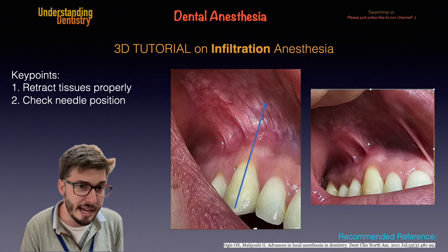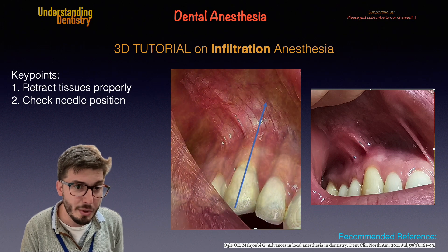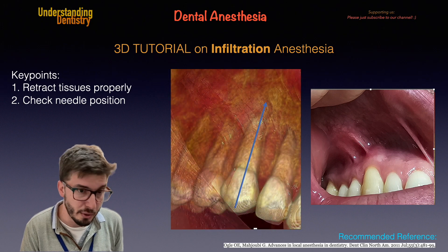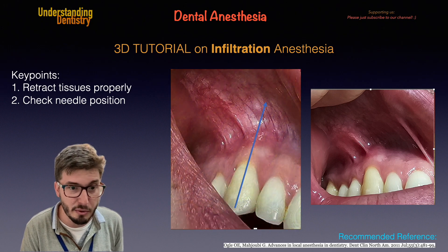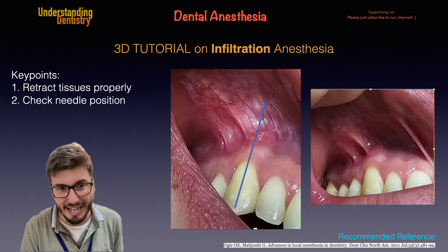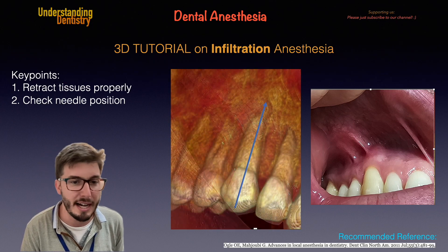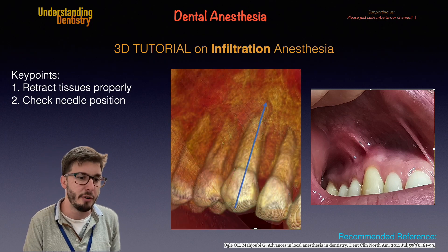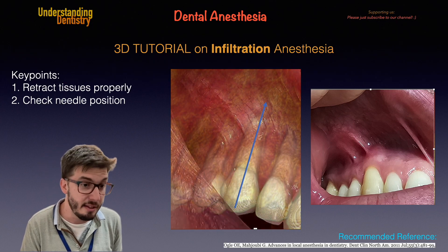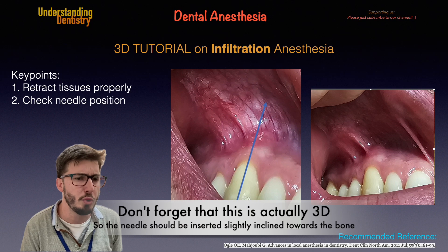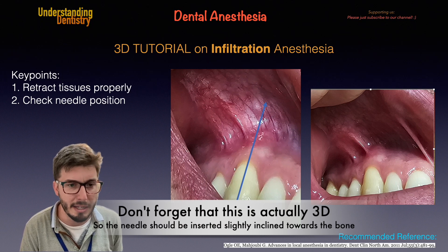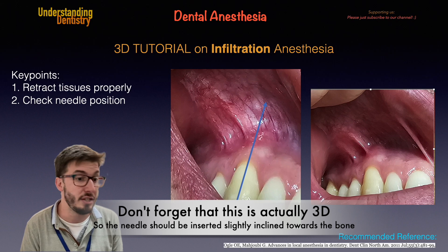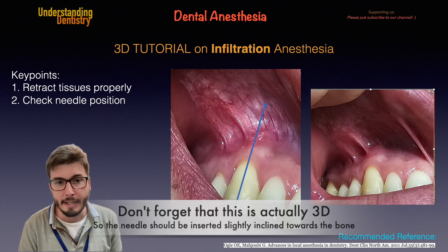Take a look at this arrow showing the end of the root. For a canine, the apex would be a little bit higher than for other teeth, but usually insertion would be around two to three millimeters, provided that you are retracting the tissues properly.